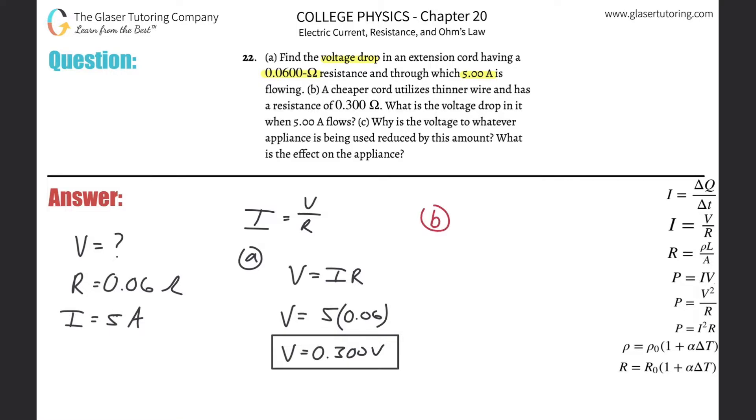So it says B, a cheaper cord utilizes thinner wire and has a resistance of 0.3 ohms. What is the voltage drop now when 5 amps flows? So again, what do we know? We know the same piece of information. The only thing that's going to be changing here is going to be the resistance. So it's no longer 0.06. It's going to be 0.3. So I can use the same formula here.